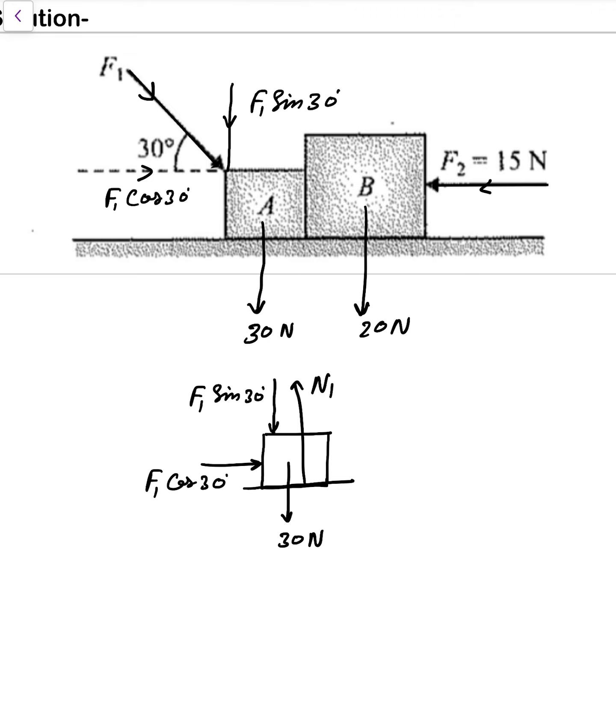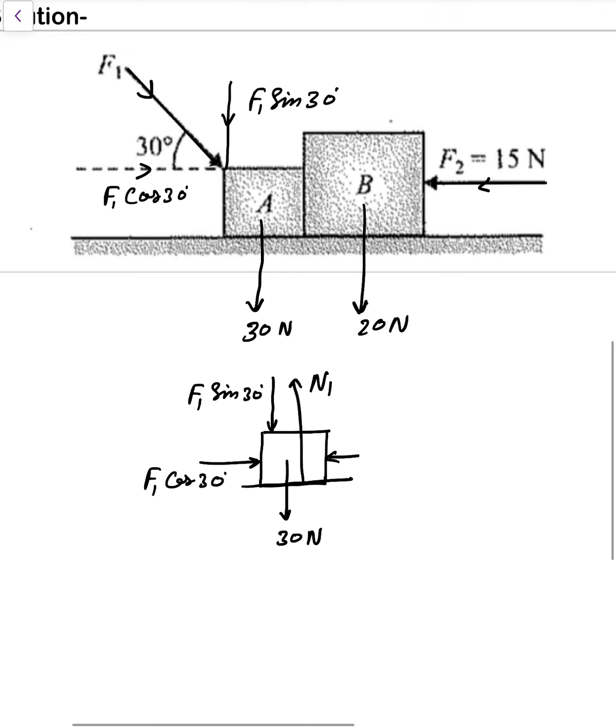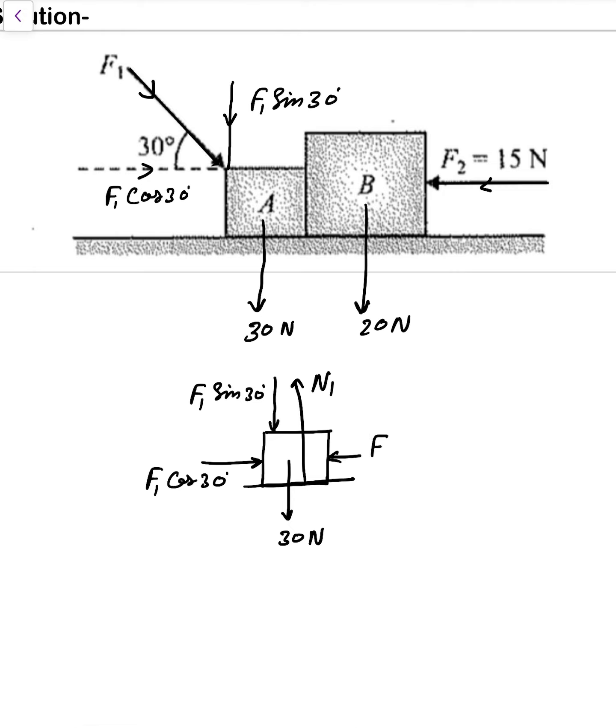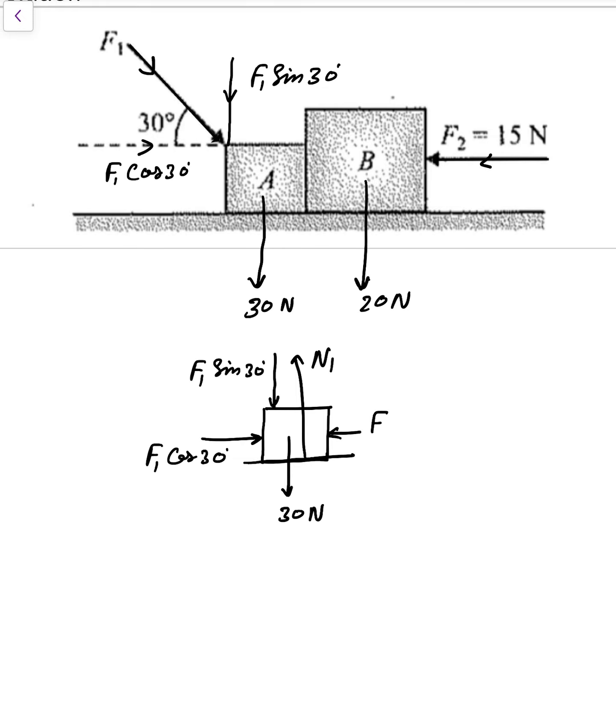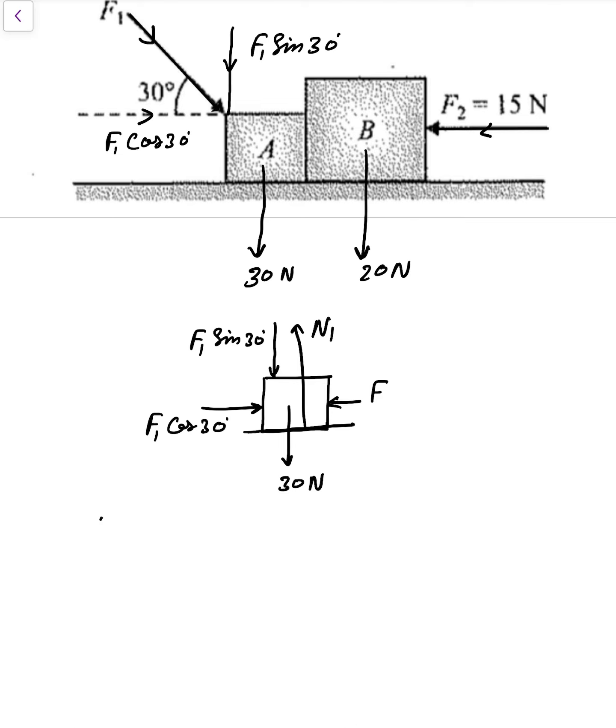And that force, suppose that is simply F. Now if this block is not moving, that is sure F1 sin 30 plus 30 Newton, this will be equal to N1.